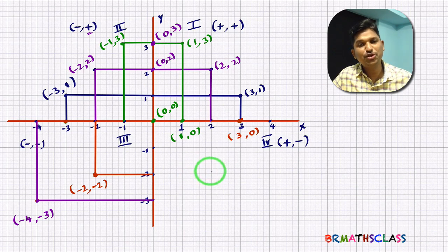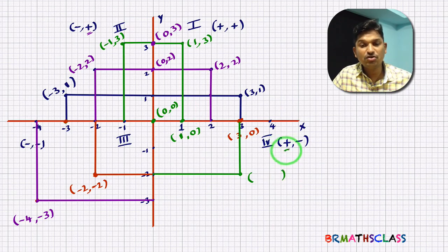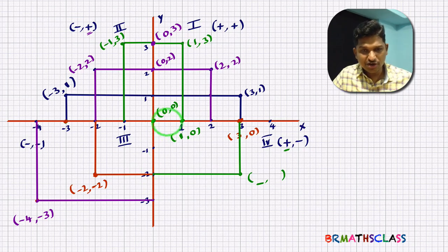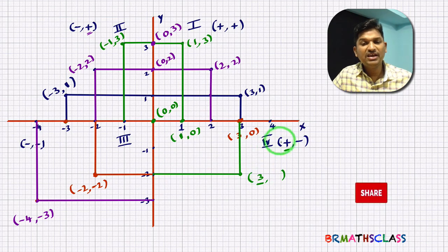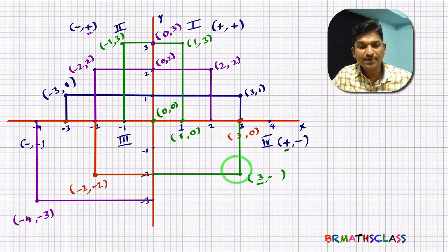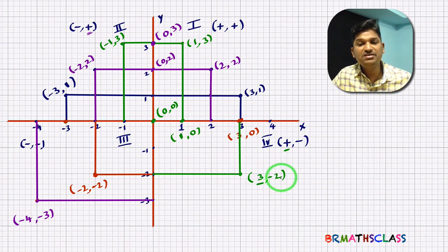Now observe the fourth quadrant. This point is in the fourth quadrant, where x-coordinate is positive and y-coordinate is negative. The x-coordinate — this length — is 3 units, so x = 3. The y-coordinate is negative: perpendicular distance from the point to the x-axis is 2 units, so y = −2. As this point is in the fourth quadrant, its y-coordinate is negative. This point is (3, −2).